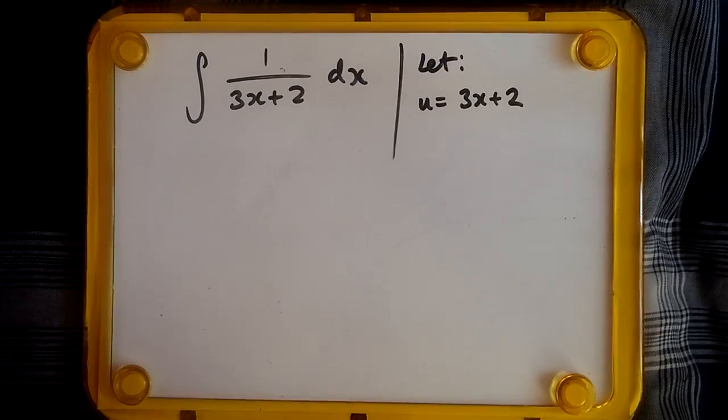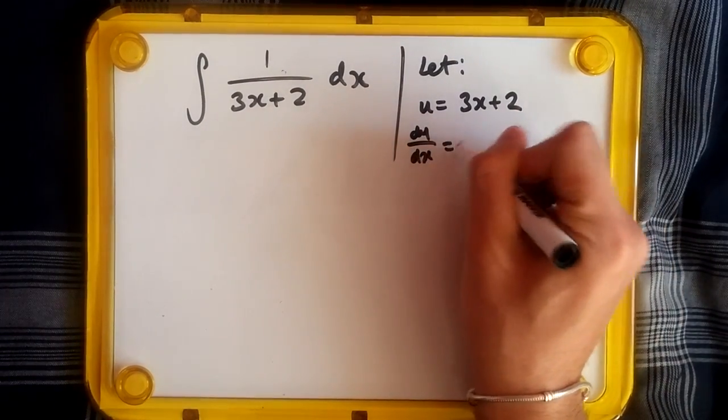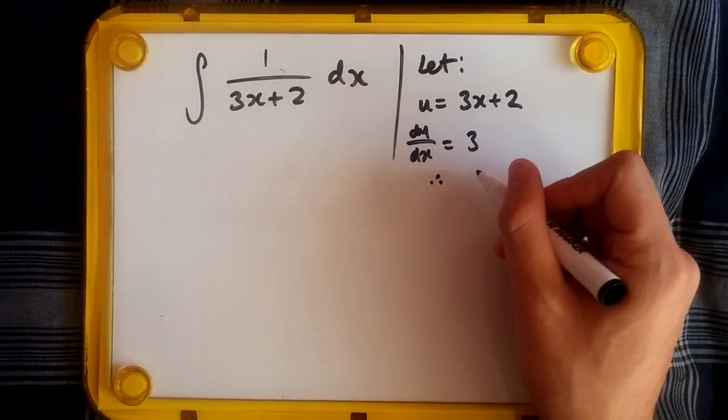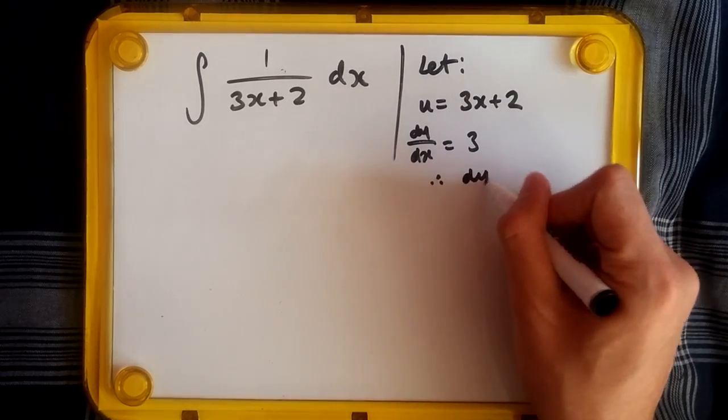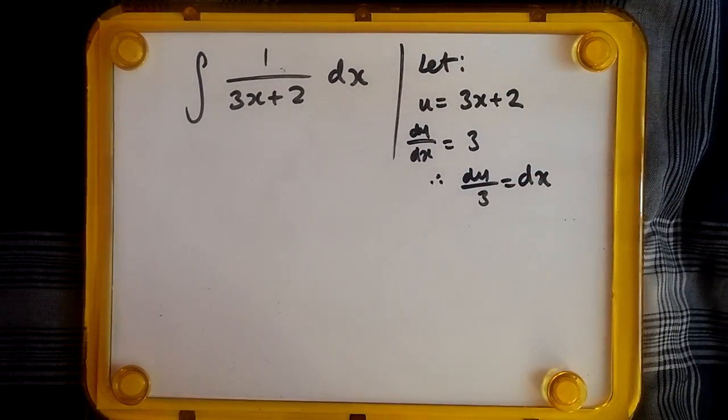When you differentiate this one, so using the substitution, we should get du over dx equals, and differentiate 3x plus 2, you should get 3. Of course, applying dx across and dividing 3 should get du over 3 equals dx. So just inverting the values.